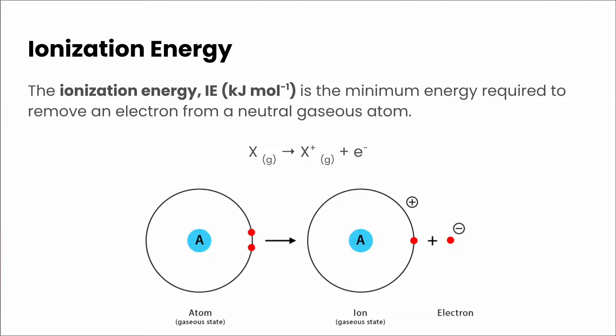So if we take, for example, our atom here that has two electrons, then we remove one electron and then we have an electron left over. This has now effectively created an ion. This is defined as our first ionization energy. We can do subsequent ones — a second ionization energy, which would take our positively charged ion and remove one more electron to make it a two plus. We could have a third ionization energy, which would take our two plus ion, remove one more electron to make it a three plus, and so on.